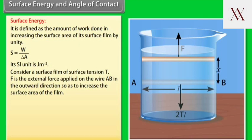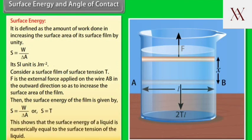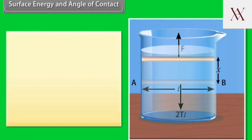Consider a surface film of surface tension T. F is the external force applied on the wire AB in the outward direction so as to increase the surface area of the film. Then the surface energy of the film is given by, we know that S equals W upon delta A. This gives the result of S equals T. This shows that the surface energy of a liquid is numerically equal to the surface tension of the liquid.